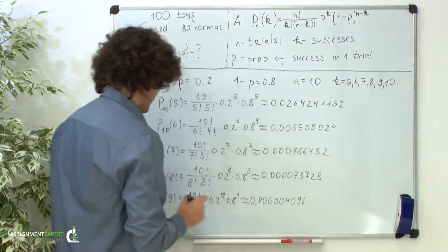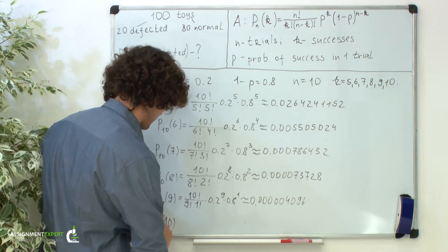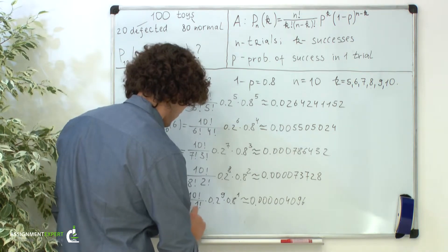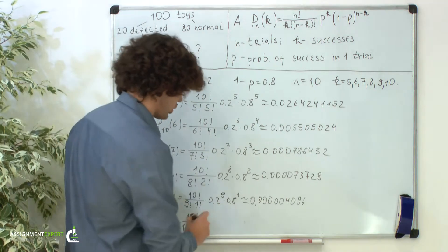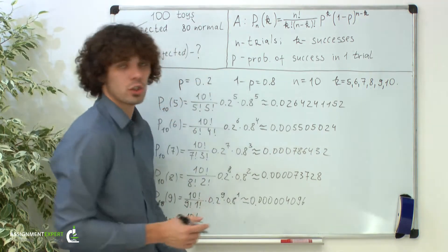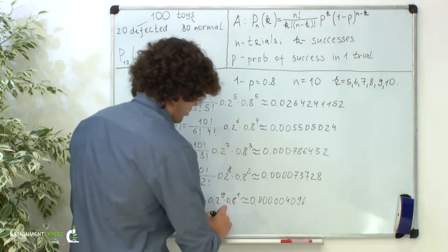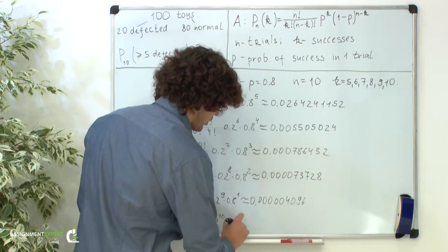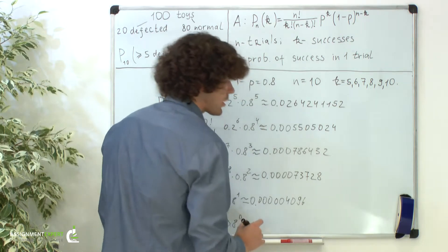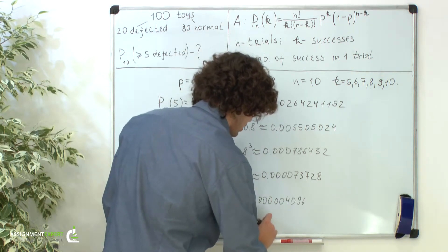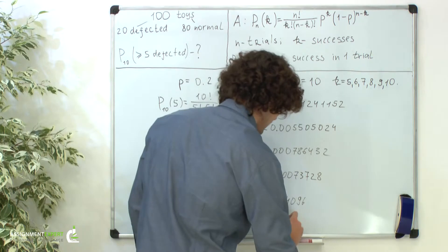And now the last case when k is 10: the probability of 10 successes out of 10 trials equals 10 factorial over 10 factorial times (10 minus 10) factorial, which is 0 factorial. Recall that 0 factorial equals 1, then we have times 0.2 raised to the tenth power, times 0.8 raised to the power of 10 minus 10, which is 0. Here we obtain approximately 0.00000001024.